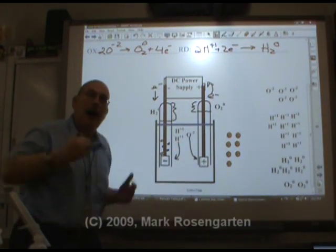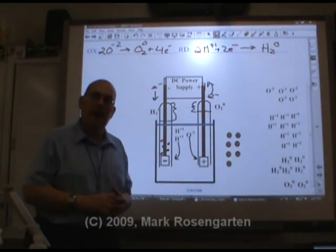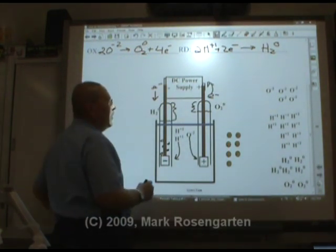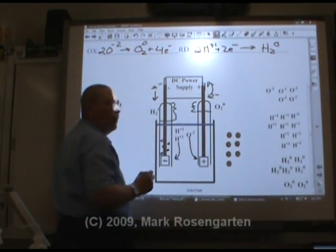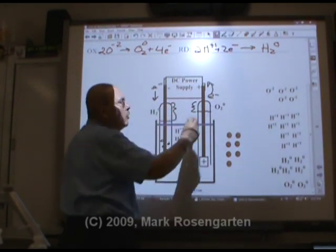Why? Avogadro's hypothesis. Equal volumes of gas will have the same number of molecules if the temperature and pressure are the same. But because there are twice as many molecules of hydrogen as oxygen, hydrogen will occupy twice the volume of oxygen.